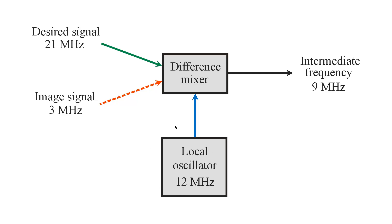So this is where your tuning control for your receiver is. But unfortunately, if you do not have sufficient selectivity in the front end of the receiver — that is, all of the stages prior to the difference mixer circuit — you can get reception at 9 megahertz at frequencies other than what you want to hear. For example, if all of the RF amplifier stages prior to the difference mixer had exceedingly poor selectivity, or if an exceptionally strong signal came in at a particular frequency that you didn't want to hear.